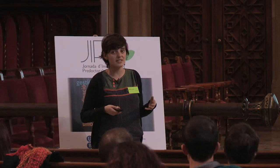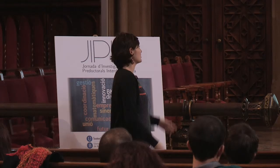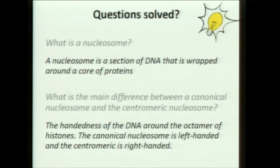The promoter is the region just at the beginning of every gene and is the binding site for the RNA polymerase. Usually it is composed of three or four nucleosomes, and these nucleosomes also have histone variants and a lot of histone modifications. So we hope that we can find there also singular nucleosomes.